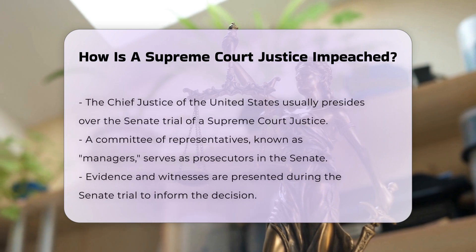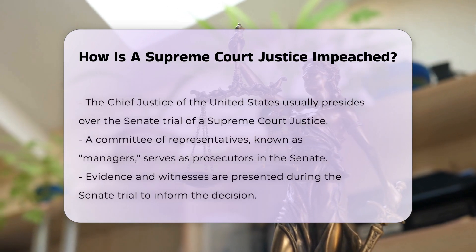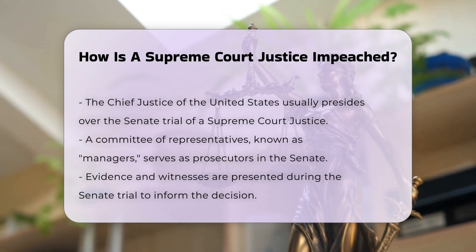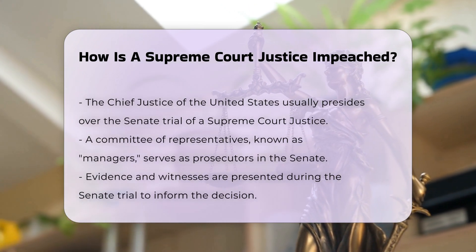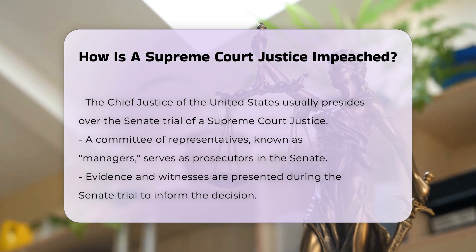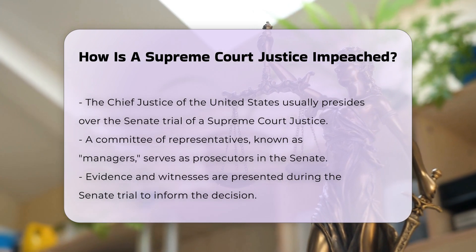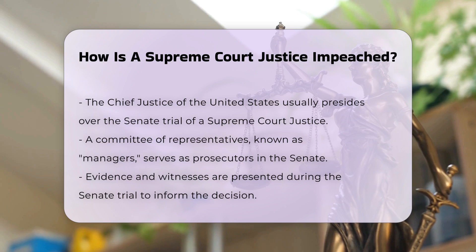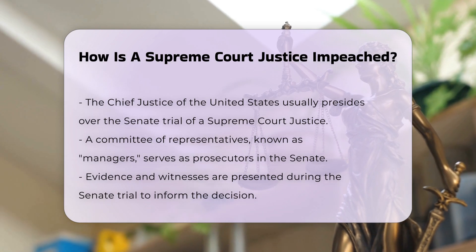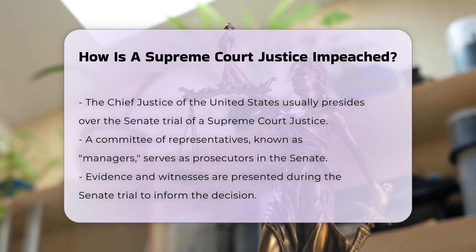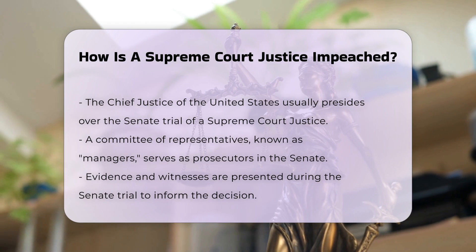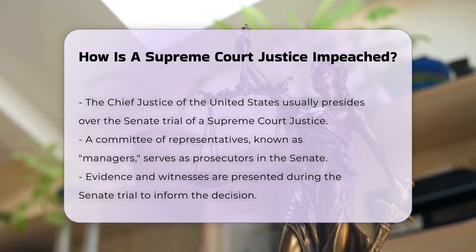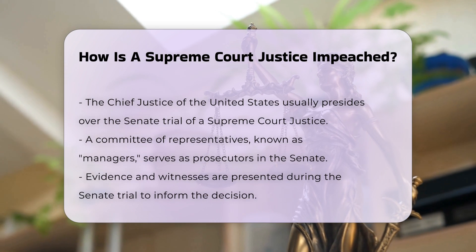Evidence and witnesses: The Senate considers all the information provided to make a decision on whether to convict or acquit the impeached justice. To convict a Supreme Court justice, a two-thirds majority vote of the Senate is required. If convicted, the justice is removed from office. In some cases, the Senate may also disqualify the justice from holding future public offices.